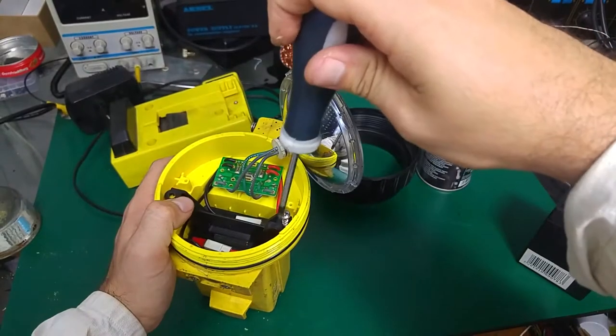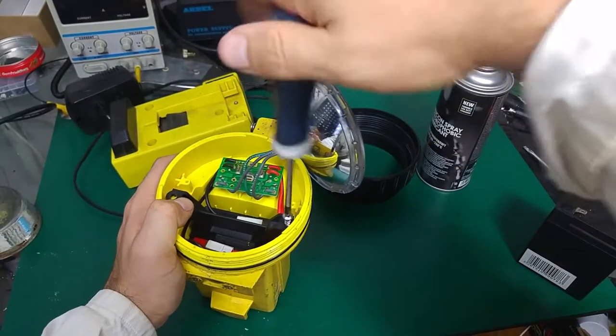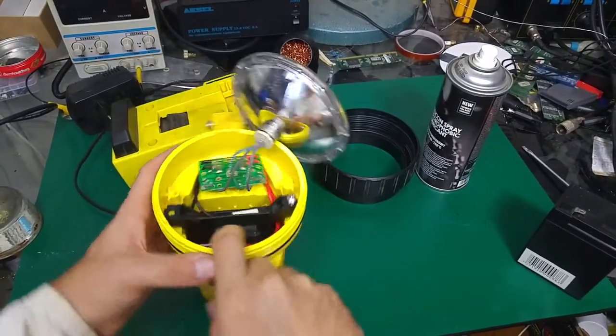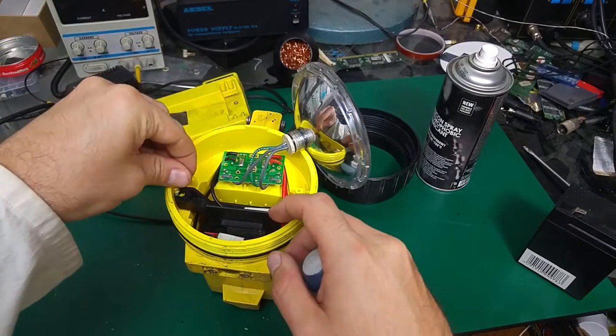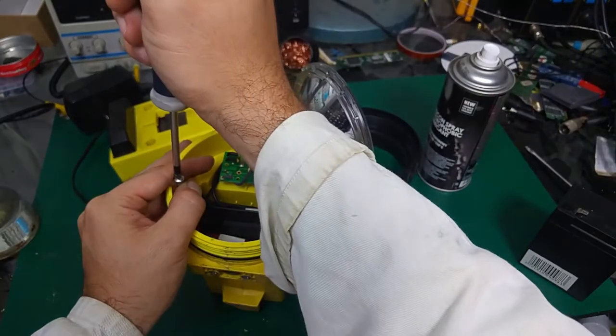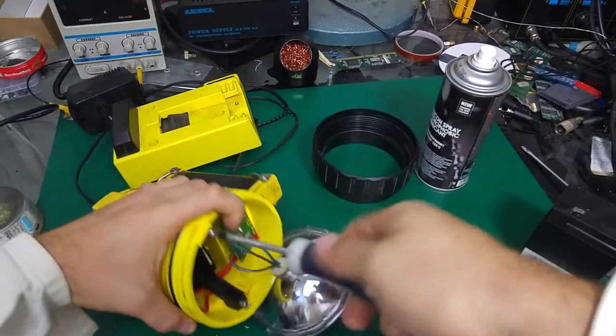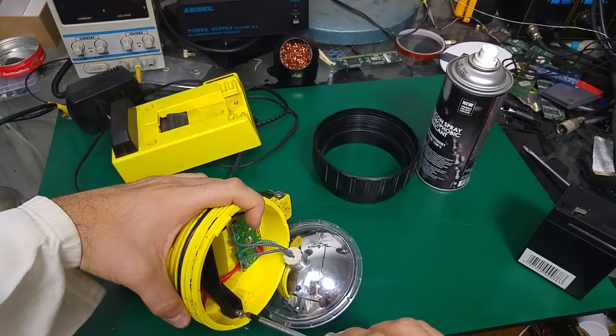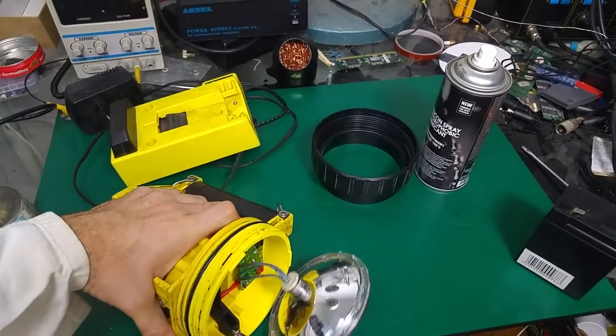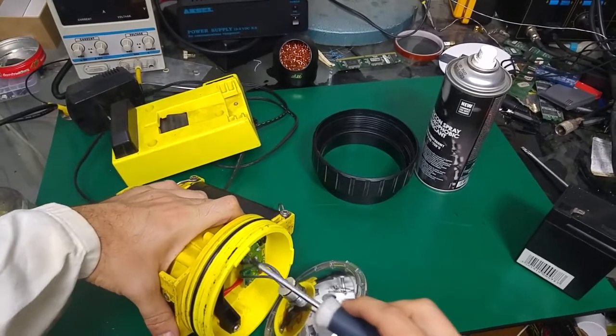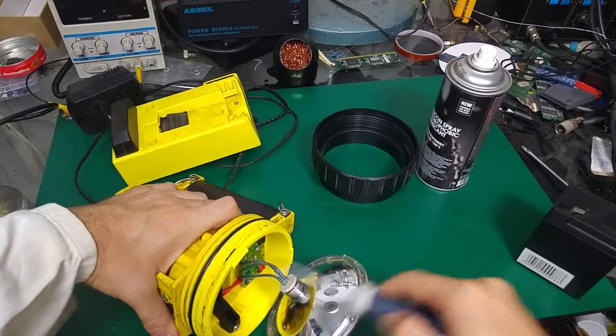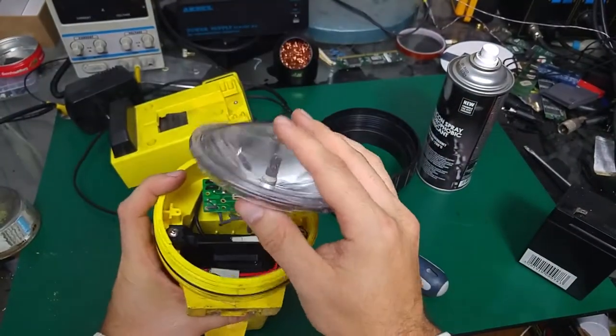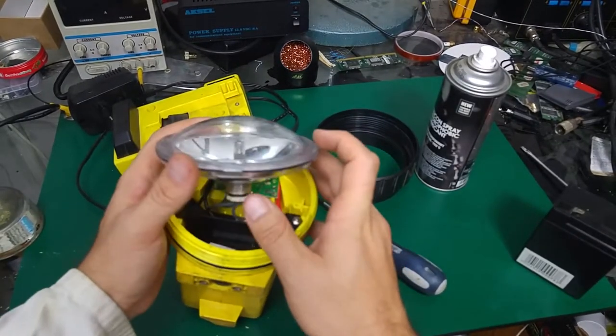Next we are going to add the silicon oil on the seal. Okay, make sure no wire goes in the way and we are going to put it back.